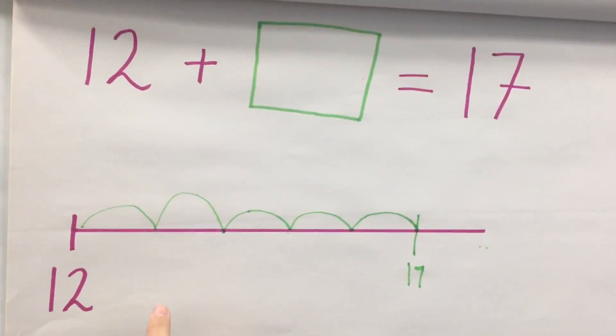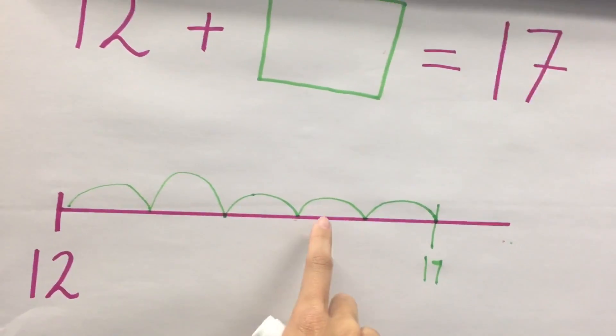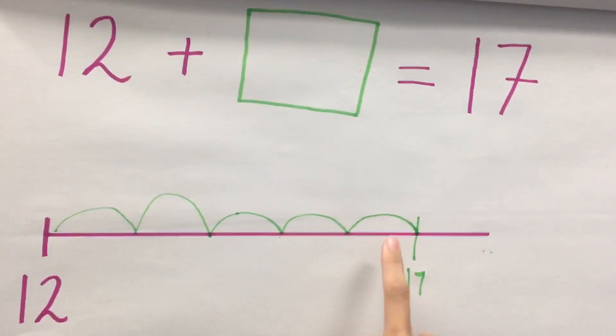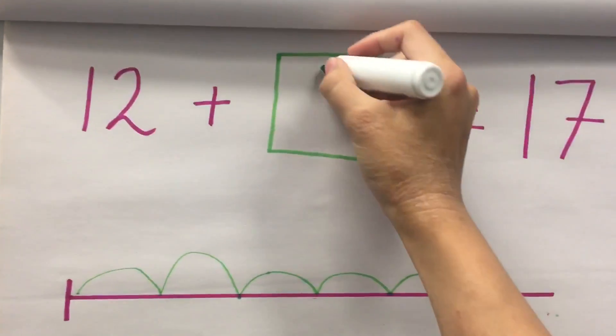Now, you need to count how many jumps you've done. So, it'd be 1 jump, 2 jumps, 3 jumps, 4 jumps and 5 jumps. So, the missing number to this problem would be 5.